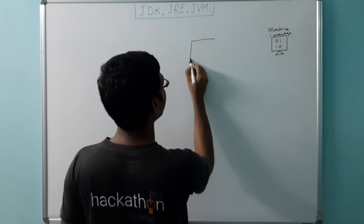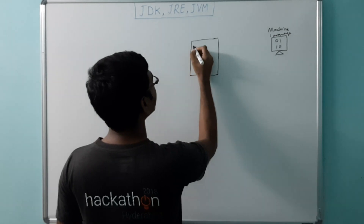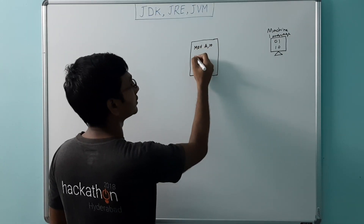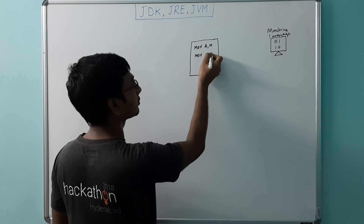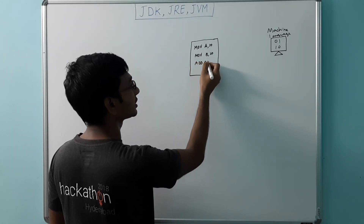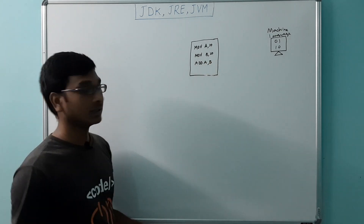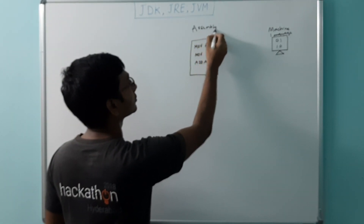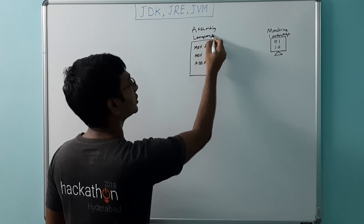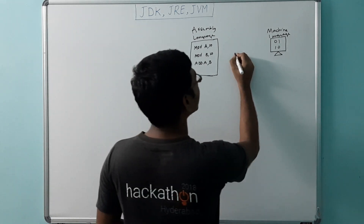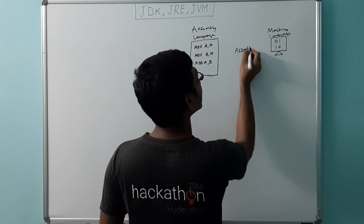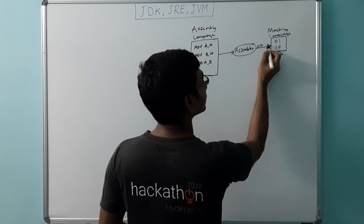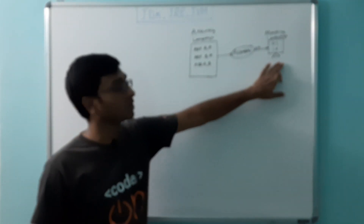Let me represent it here. In assembly language, instructions were given in steps. For example, if we wanted to add two numbers, A has 10 and B has 20. To add these two numbers, we write an instruction where A and B will be added up and the sum stored in A. This is what we call assembly language. These instructions written in assembly language were converted by an assembler to machine code — binary code — and that will be executed on the machine.